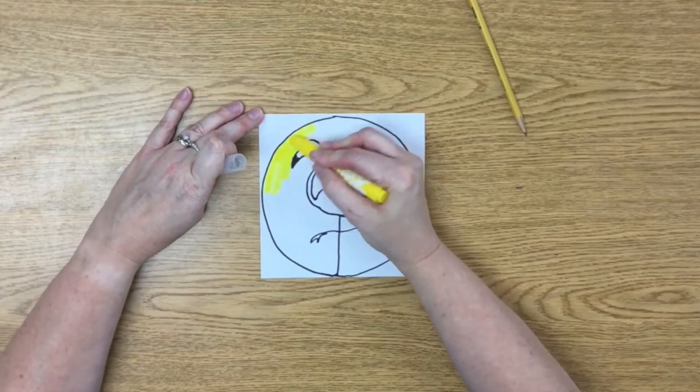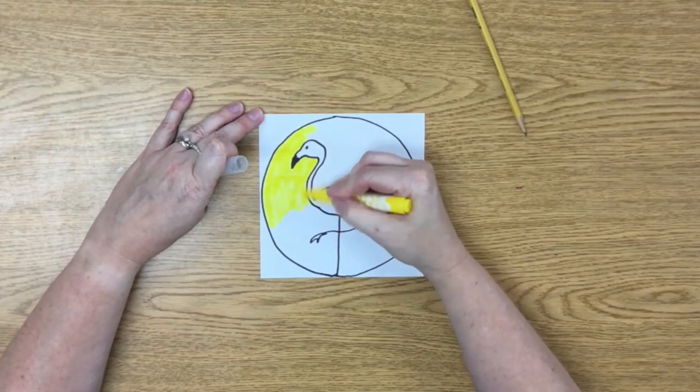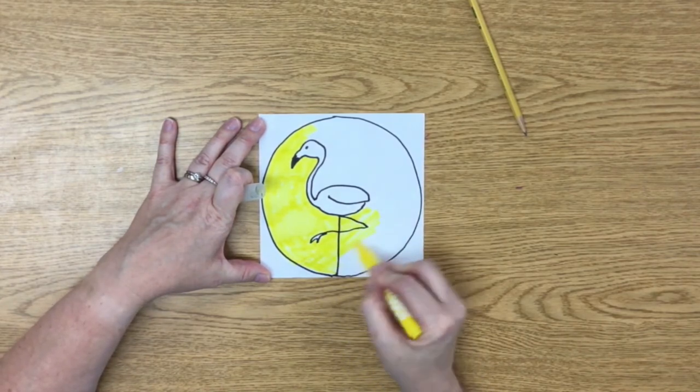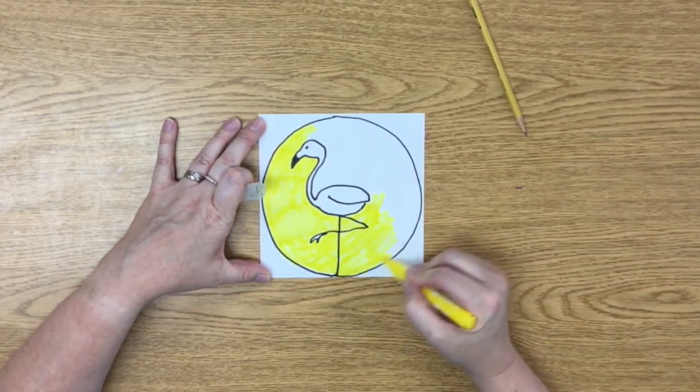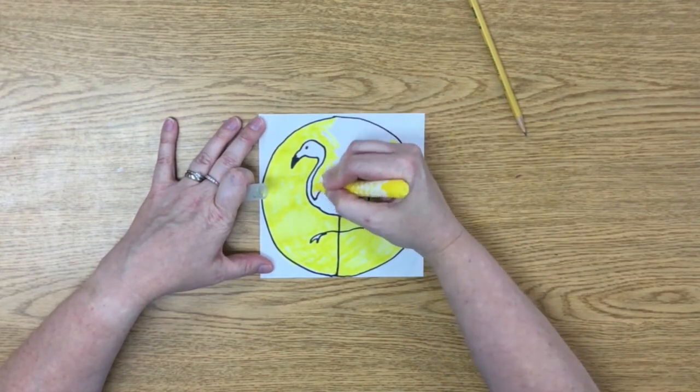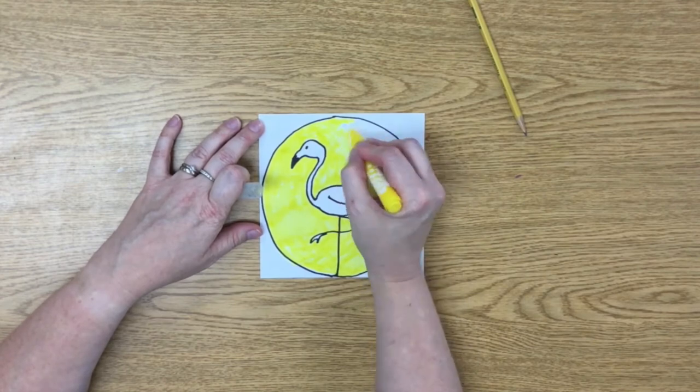We are going to get into some color mixing in a bit, so normally I wouldn't be forcing you to use certain colors, but for now I am. For this part, it actually makes sense. Color your entire sun yellow. This is why I said a small piece of paper. Coloring with markers takes forever.